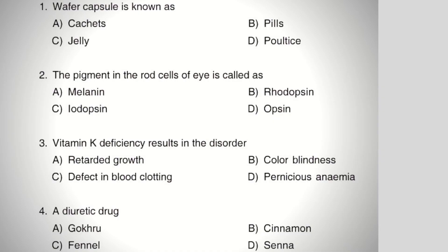The first question: wafer capsule is known as — Option A: cachets, Option B: pills, Option C: jelly, Option D: poultice. The right answer is Option A, cachets. Cachets are solid unit dosage forms of drugs. They are also known as wafer capsules because they are molded from rice paper, made by pouring a mixture of rice flour and water between two cylinders, and then the water evaporates forming a sheet of wafer. Cachets are used to enclose nauseous or disagreeable powders.